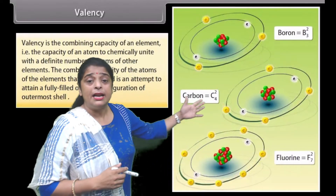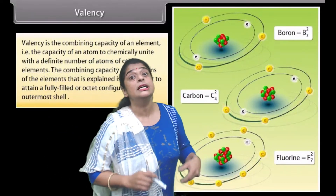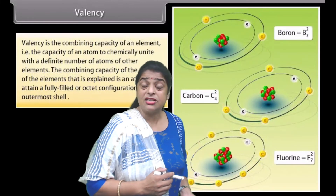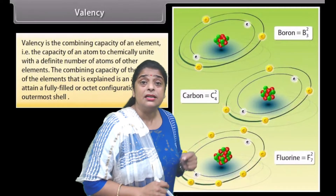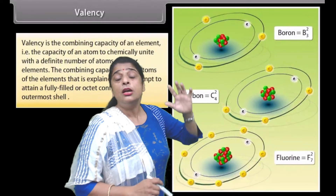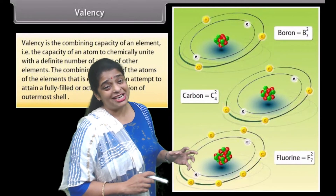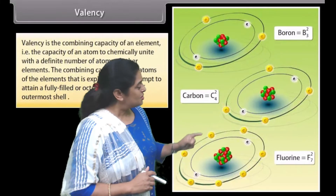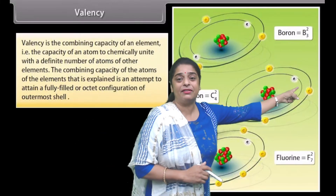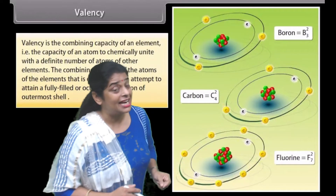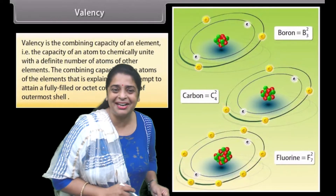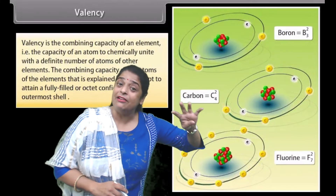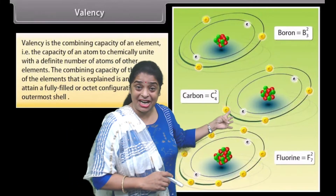Carbon has atomic number 6, meaning it has 6 electrons in its atom. The first shell accommodates 2 electrons. Then 4 electrons are left with carbon, and they move to the second shell. The shell continues to be filled until it gets 8 electrons.